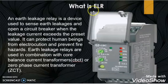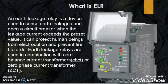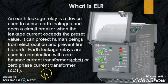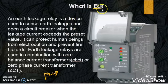Earth leakage relay is a sensing device which senses the earth leakage current. When the earth leakage relay finds this earth leakage current more than its preset value for more than its preset time, then the earth leakage relay opens the circuit breaker in order to break the circuit. The function of ELCB, that is earth leakage circuit breaker, and the function of ELR, that is earth leakage relay, is same but the operation is different.